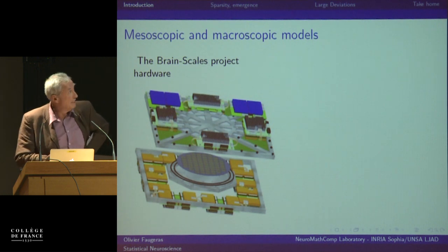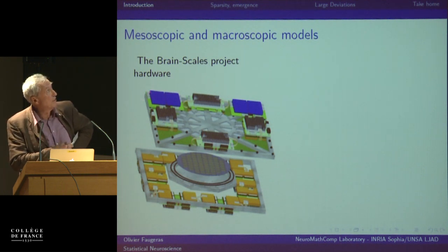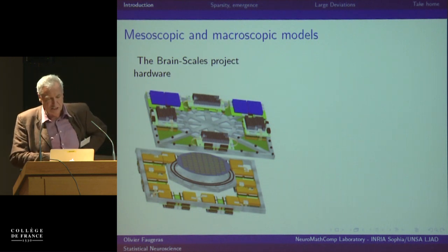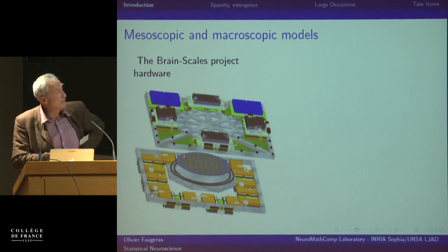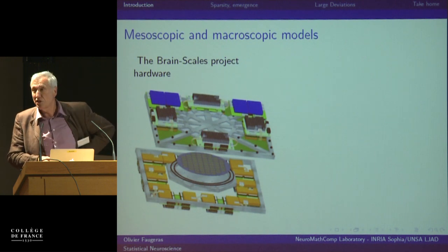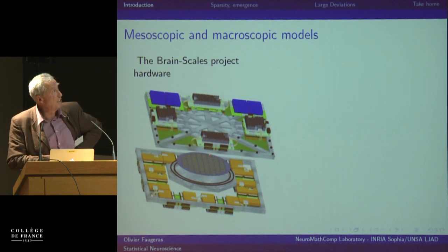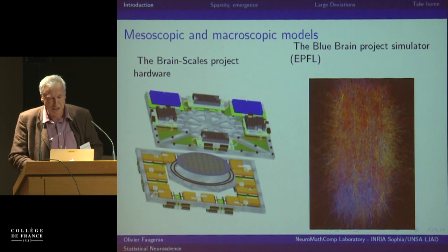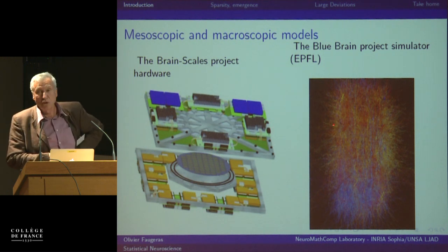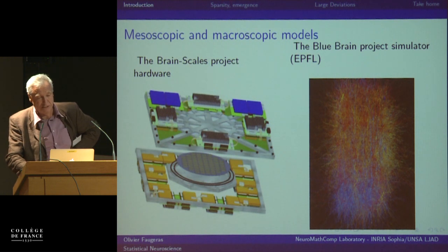Other reasons for developing statistical neuroscience are due to technological advances. In the BrainScaleS project — a European project I participate in — people in Germany have developed large-scale integration devices that allow simulation of millions of neurons of a certain type. It's important to be able to describe the activity of these neurons and program this machine. Similarly, the Blue Brain Project simulator deals with millions of neurons, and coming up with descriptions of their joint activity is fundamental.